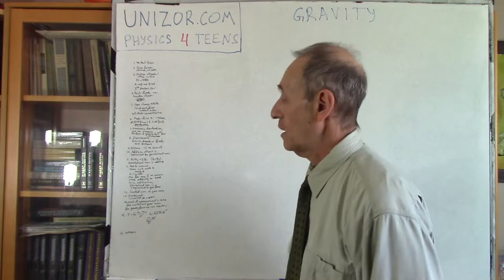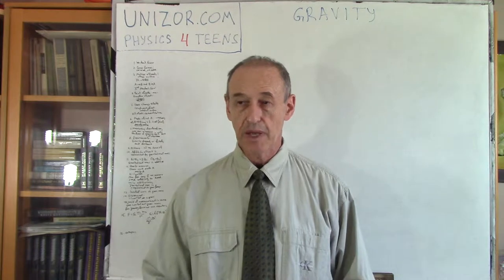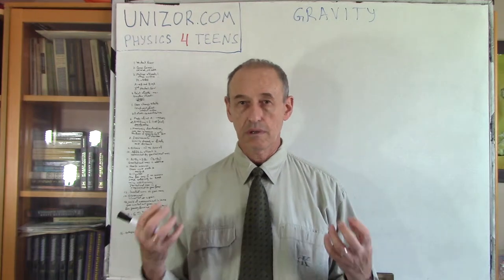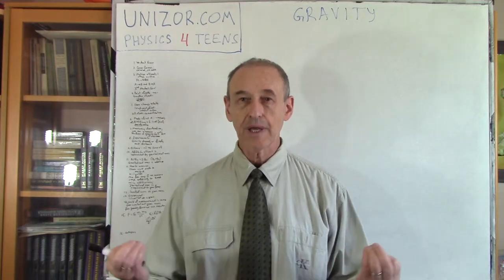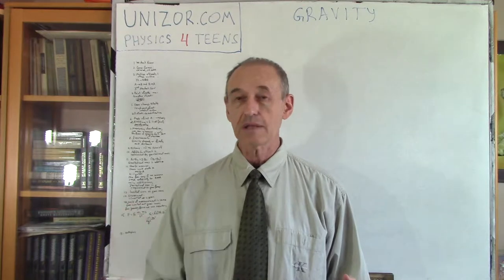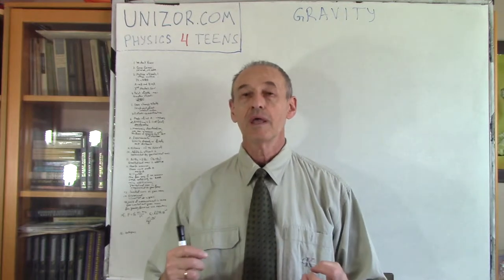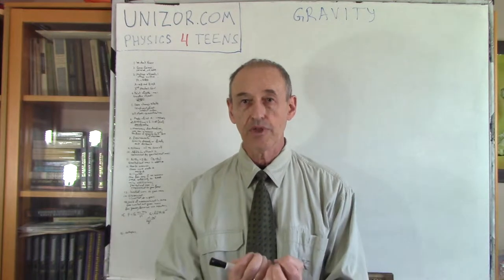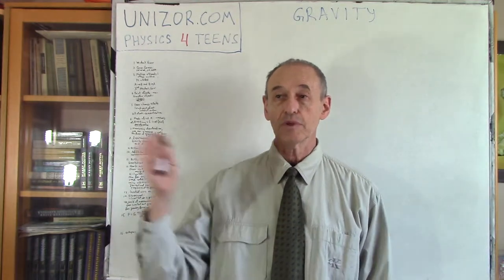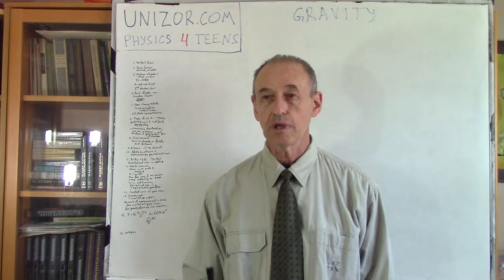The most important property — what gravitation is actually about — is that matter attracts matter. If you have two objects in this world, they have a certain attraction to each other. If you take one object and another object, and there is nothing else in the universe except these two objects, they will attract each other and tend to come together. If you have only one object, there is nothing to attract it, and it will continue its inertial movement with a constant velocity in a constant direction indefinitely.